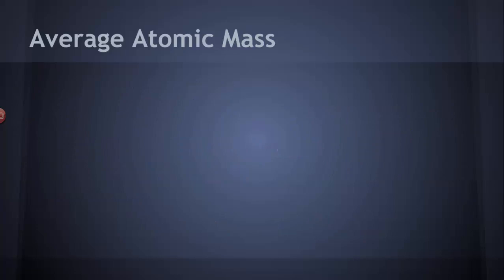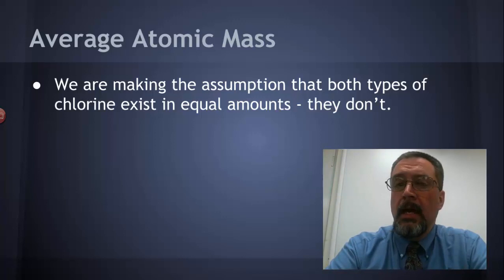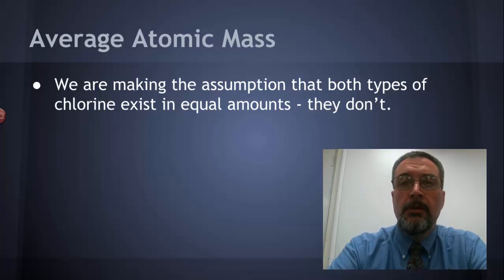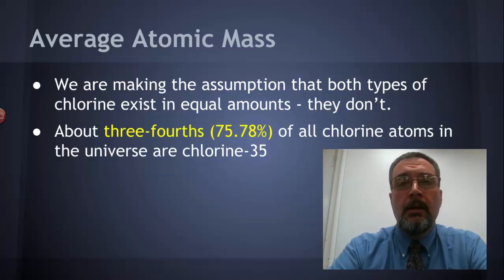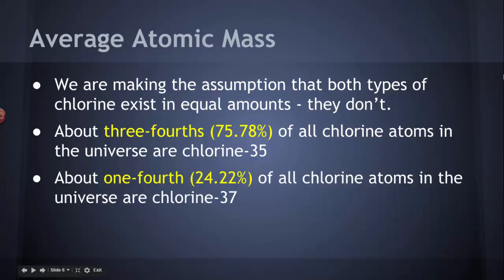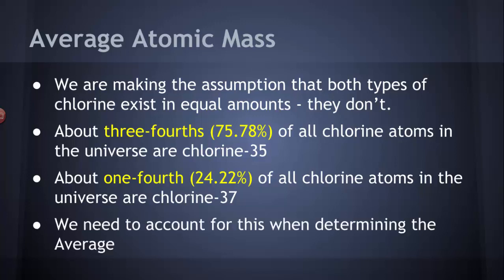Well, the key is that we're making a very important assumption. The assumption that we're making when we calculate the average atomic mass by adding those two masses together and dividing by two is we're assuming that the chlorine, the two types of chlorine, are present in equal amounts in the universe. They don't exist in equal amounts. As a matter of fact, about three-fourths of all chlorine atoms in the universe are chlorine-35 and with the mass of almost 35 AMU. And only one-fourth of the atoms of chlorine in the universe have a mass of about 37, about the same mass as chlorine-37. So, we don't have equal amounts, which means when we calculate the average, we can't consider them both 50-50. They're not. It's more like 75-25. And so, we have to take that into account when we're determining the average atomic mass. That's called a weighted average.